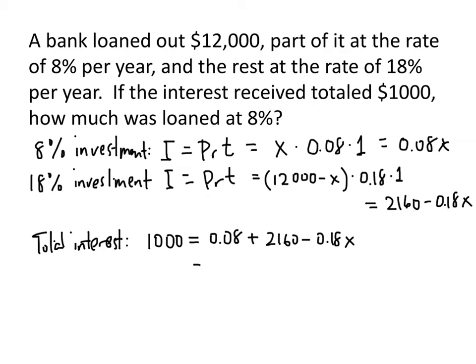Let's simplify the right-hand side. .08x minus .18x is going to be negative .10x, and then we still have plus 2160, with 1,000 on the left-hand side.